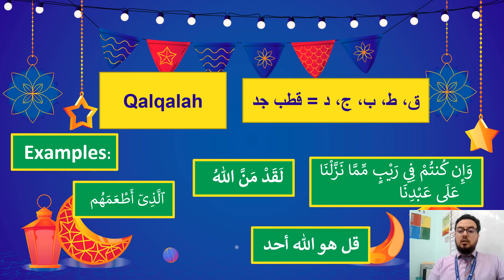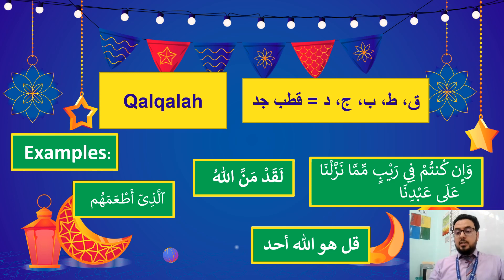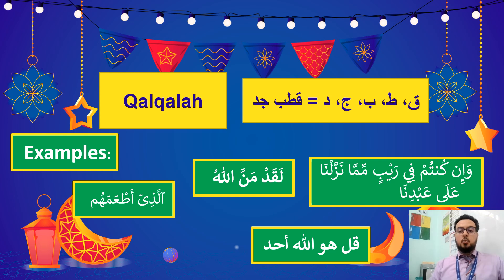Next one — قل هو الله أحد. Here it is supposed that there is no قلقلة in case we continue. Because دال has تنوين, so if we continue we say: قل هو الله أحدٌ الله الصمد. But if we stop, there is قلقلة in the word أحد on the دال — or أحد.